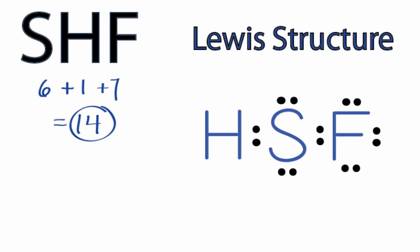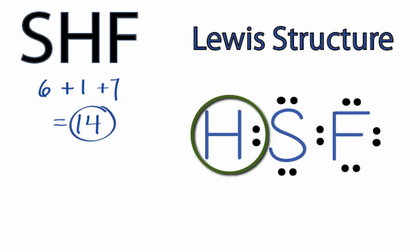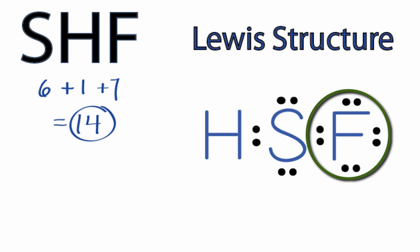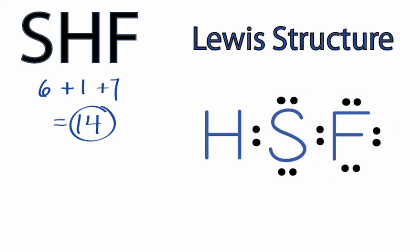At this point, we've used all 14 valence electrons for the SHF Lewis structure. Hydrogen has 2 valence electrons, so its outer shell is full. Sulfur has 8 and fluorine has 8, so both of them have octets and their outer shells are full. So that's the Lewis structure for SHF.